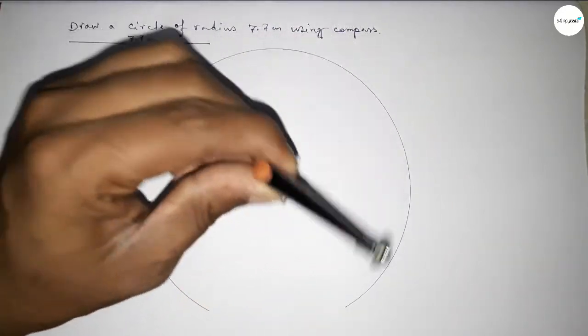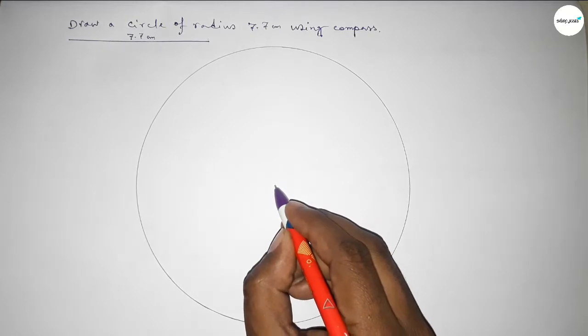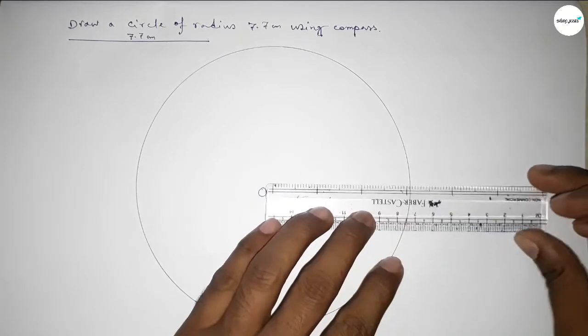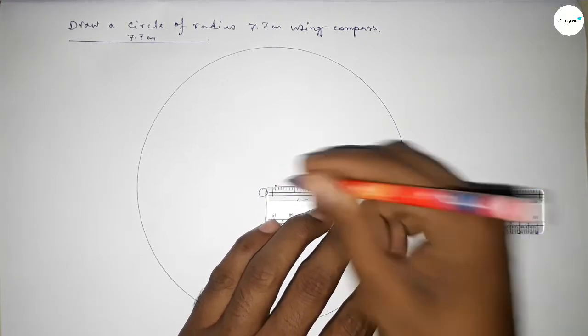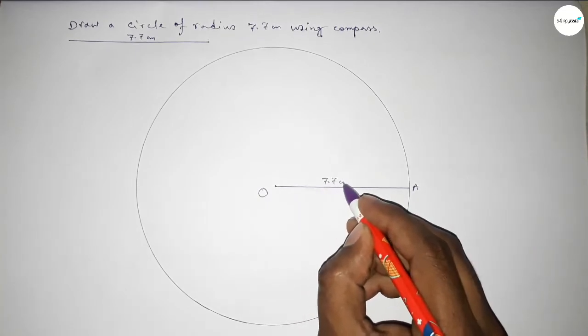Drawing an arc by this way, and this represents a picture of a circle. So this is the center of this circle. Now joining this line, and this is the radius of this circle. Taking here point A, so OA is 7.7 centimeters.